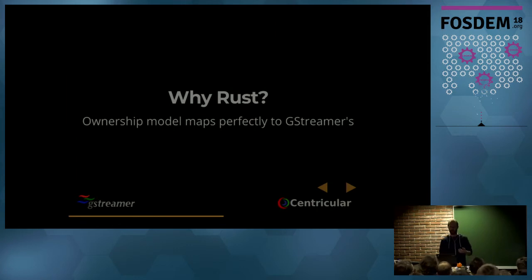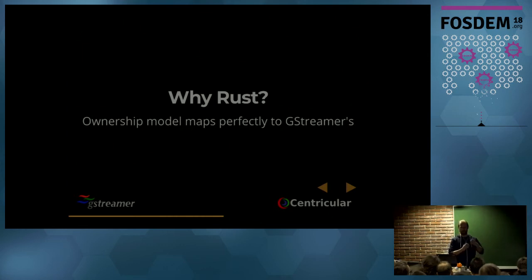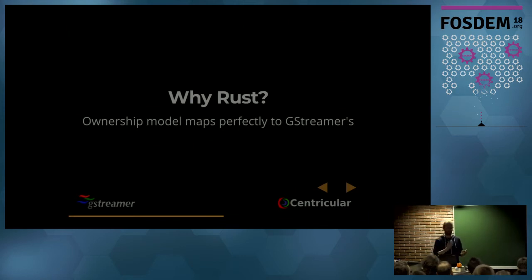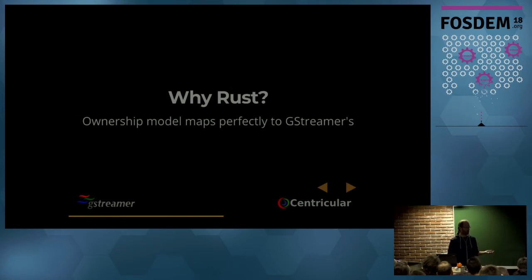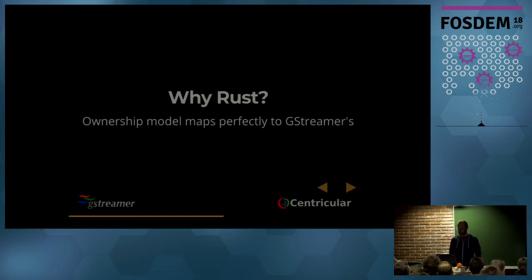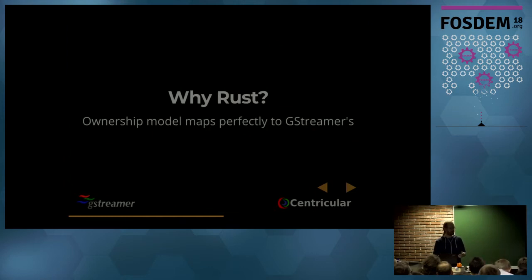GStreamer has something like Arc in Rust that allows copy-on-write at runtime: you can check if you're the only owner, and if so, you can write to the data; otherwise, you might have to take a copy. This is exactly how the basic types in GStreamer work. In C, you have to call all kinds of functions manually for this. In Rust, the compiler makes sure you don't forget, and to some degree it all happens automatically.